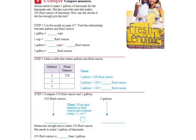On the back is page 458, and here is our first problem. Serena needs to make three gallons of lemonade for the lemonade sale. She has a powder mix that makes 350 fluid ounces of lemonade. How can she decide if she has enough powder mix? In other words, it wants us to say if 350 fluid ounces is equal to or greater than three gallons. So we need to do a conversion here.